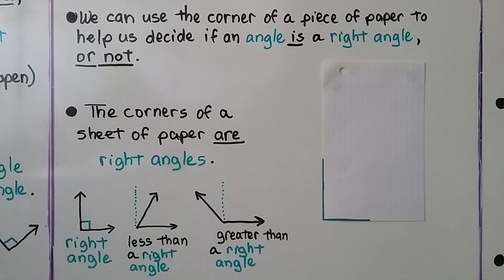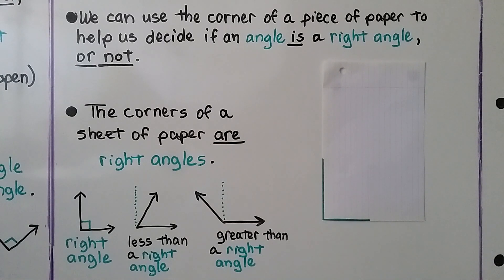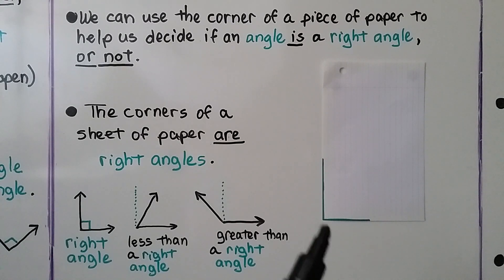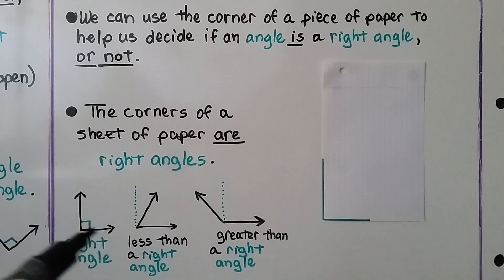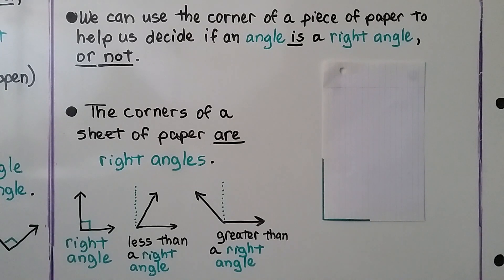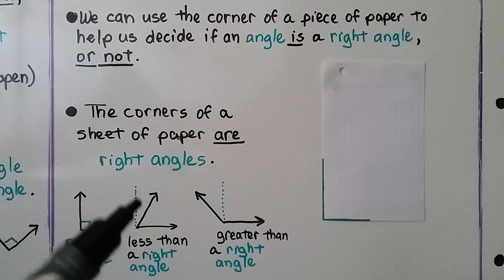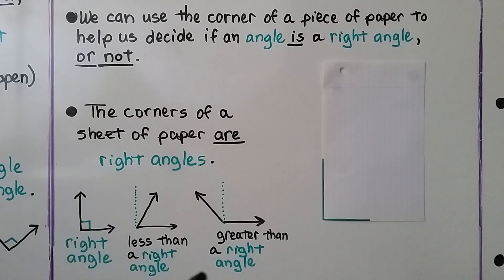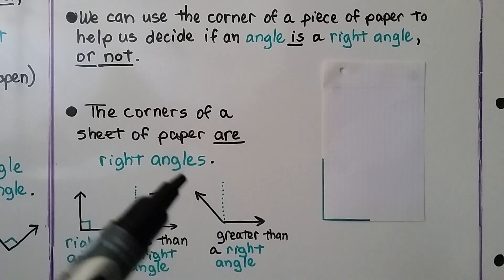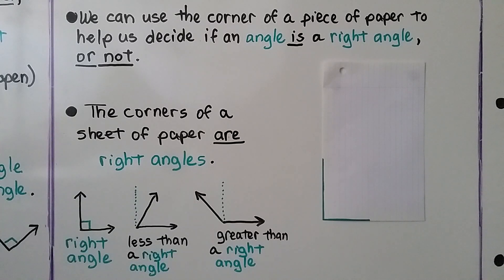We can use the corner of a piece of paper to help us decide if an angle is a right angle or not. The corners of a sheet of paper are right angles — they make a square corner. If it is a right angle it will match that corner exactly. If it's less than a right angle it'll be smaller than the sheet of paper. And if it's greater than a right angle, our angle will come out the side of it.